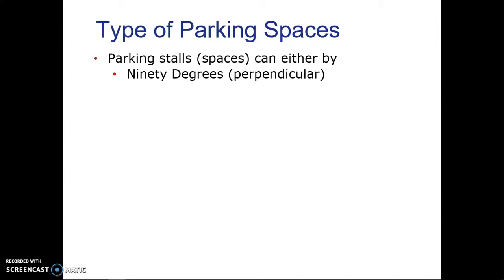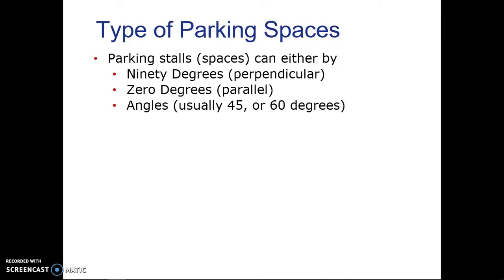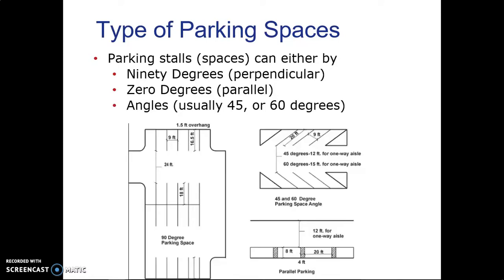Now let's talk about types of parking spaces. Parking stalls can be 90 degrees — perpendicular — which are the most popular. They can also be zero degrees, like parallel parking you'd find in New York City or along a boardwalk. Or they can be angled, usually either 45 or 60 degrees, where you go in at an angle and they're typically on one-way roadways. The standard 90-degree perpendicular is the preferred method where you can pull in, pull out, and go around.